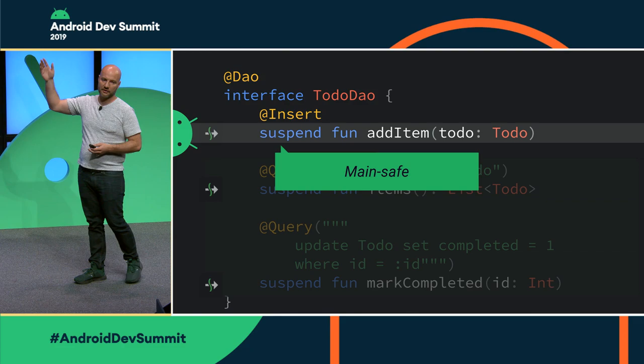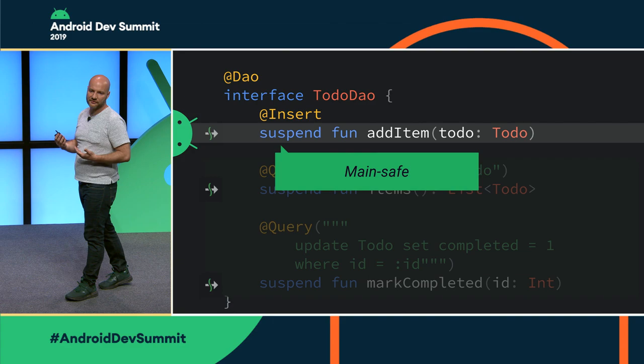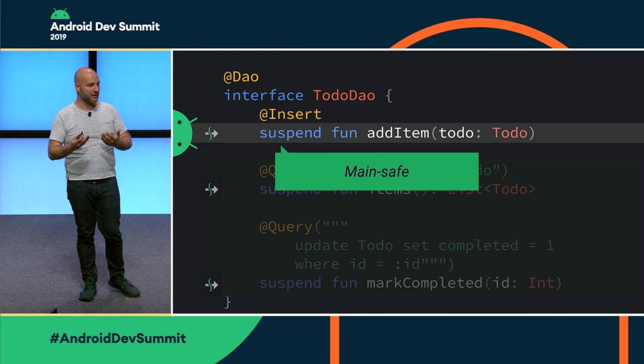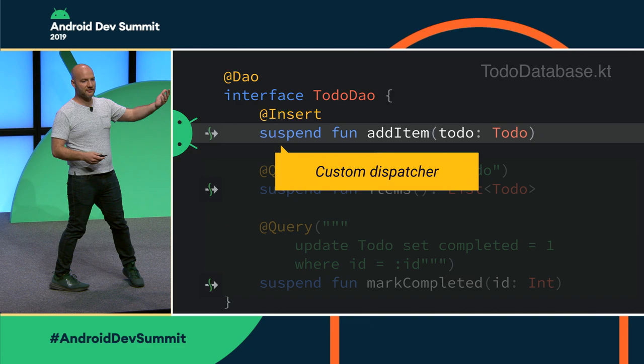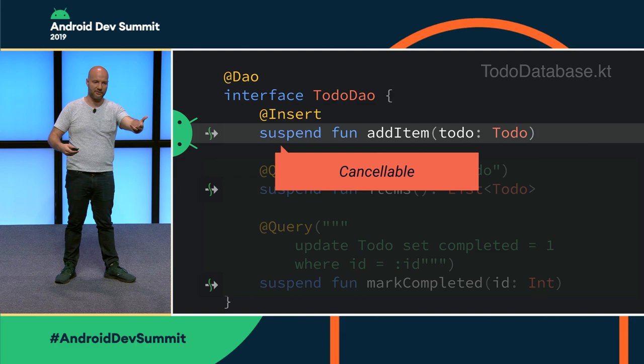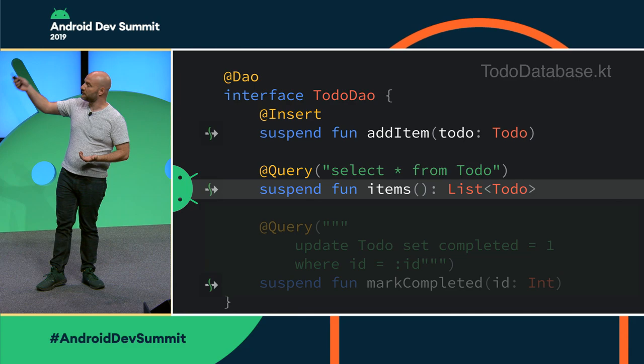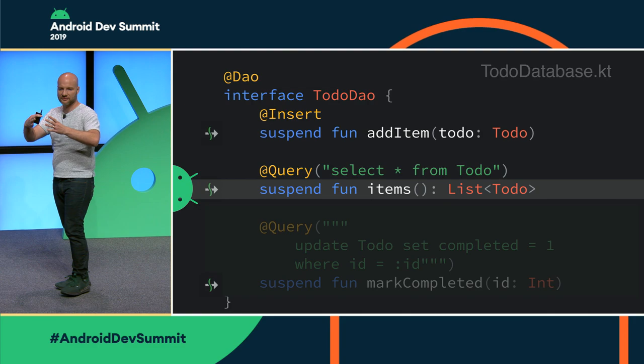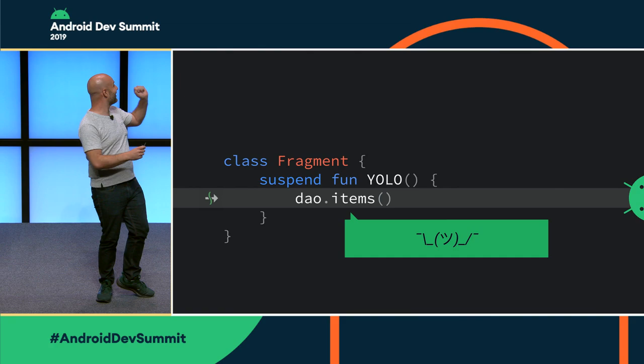We are going to add a suspend modifier on one of our Room queries. For the insert with addItem, that makes this function main-safe — it is now a suspend function, and Room is going to run that query on a background thread using a custom dispatcher, the same executor that Room uses with LiveData. It also gets the superpower of being cancellable, so if the coroutine that calls it cancels, it is cancelable all the way down. We are also going to make a suspend function for fetching all the items. You could use Flow for something like this as well, but I want to keep this example simple so we can focus on the testing part.